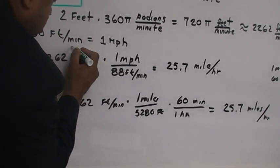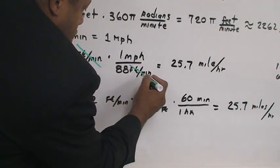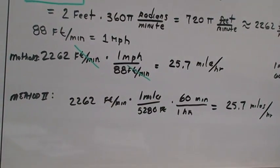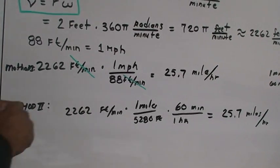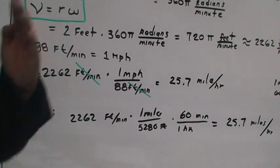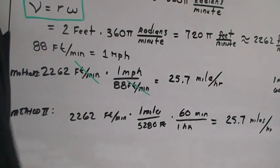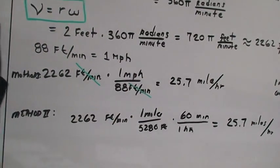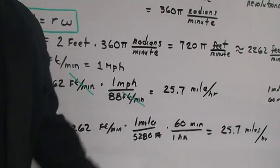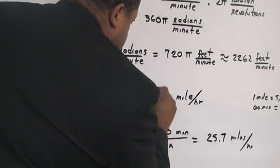So when you calculate that, and actually these will cancel out, cross-cancel out, not cross-multiply, but cross-cancel. A lot of students have intended to say cross-multiply, but it's cross-canceling here. You will get 25.7 miles per hour. This is your solution for that.